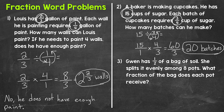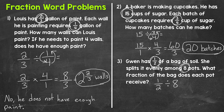Lastly, let's move on to number three: Gwen has one-half of a bag of soil. She wants to split it evenly among eight pots. What fraction of the bag will each pot receive? Gwen is dividing one-half by eight. Keep one-half, switch to multiplication, and flip eight — writing eight over one and flipping it gives us one as the numerator and eight as the denominator.